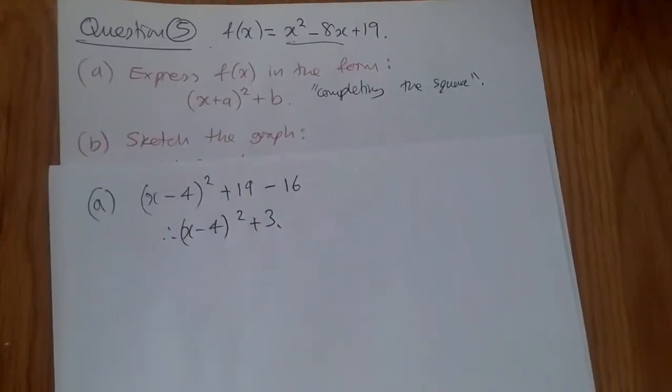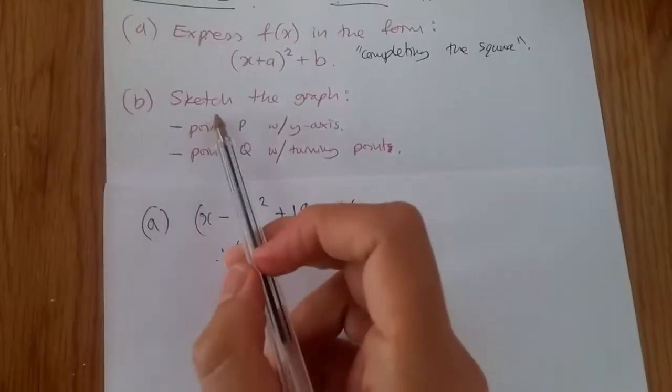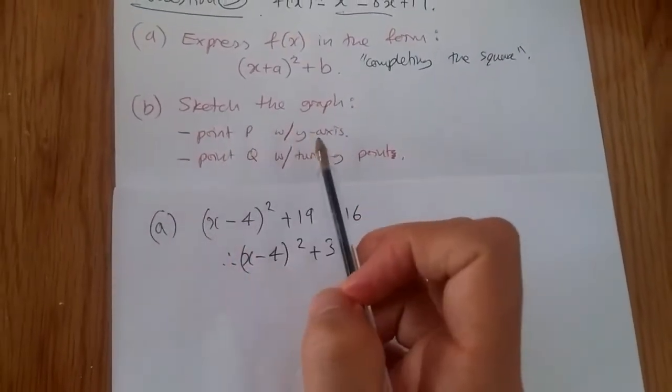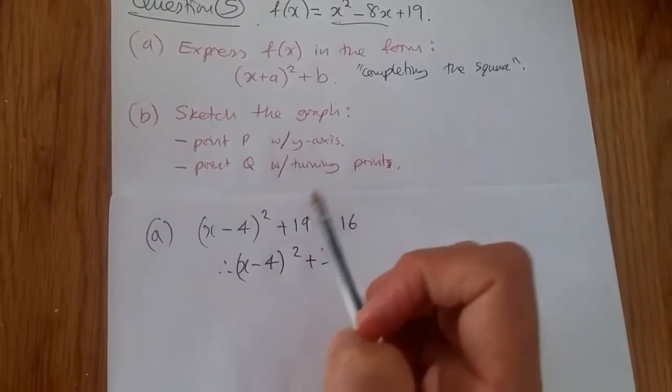Now, the main part of this question is the sketching part. So here we have to sketch the graph with the given points. So it tells us, sketch this graph at point P when it crosses with the y-axis and sketch the graph at point Q with the turning points.